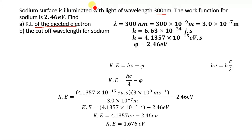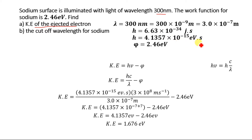From the given data, the wavelength lambda is equal to 300 nanometers, which we convert to meters: 3.0 multiplied by 10 to the power minus 7 meters. The value of Planck's constant is 6.63 multiplied by 10 to the power minus 34 joule second. Planck's constant can also be expressed in electron volts, and that value is 4.1357 multiplied by 10 to the power minus 15 electron volt second.